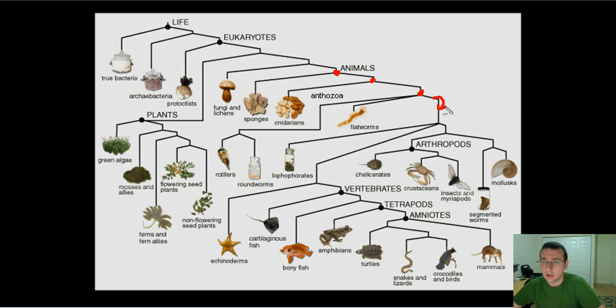Now, among the coelomates, you either have radial cleavage of your cells, or you have spiral cleavage of your cells, or you have a mixture of both. If you have a mixture of both, you're called a lophophorate. If you have radial cleavage, you're going to become what is called a deuterostome and develop from the blastopore, your anus, first.